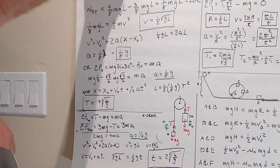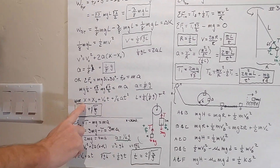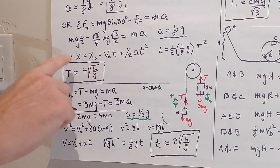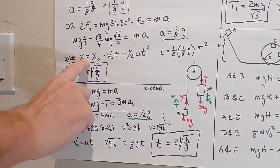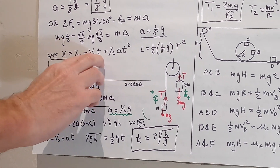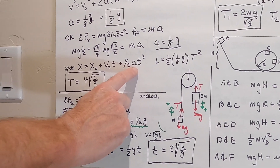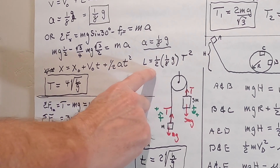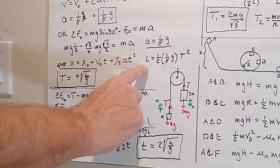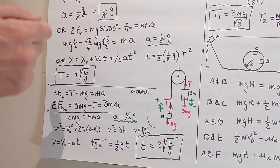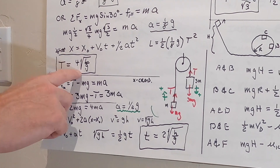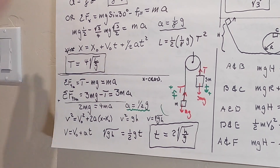Then I asked for the time it takes to go down. We have to use constant acceleration — it's the only equation that has time in it. So we plug into x equals x naught plus v naught t plus 1/2 a t squared. We know x naught is zero, v naught is zero, a is 1/8 g, and x is l. Just throw everything to one side and take the square root. So t is just 4 times the square root of l over g.